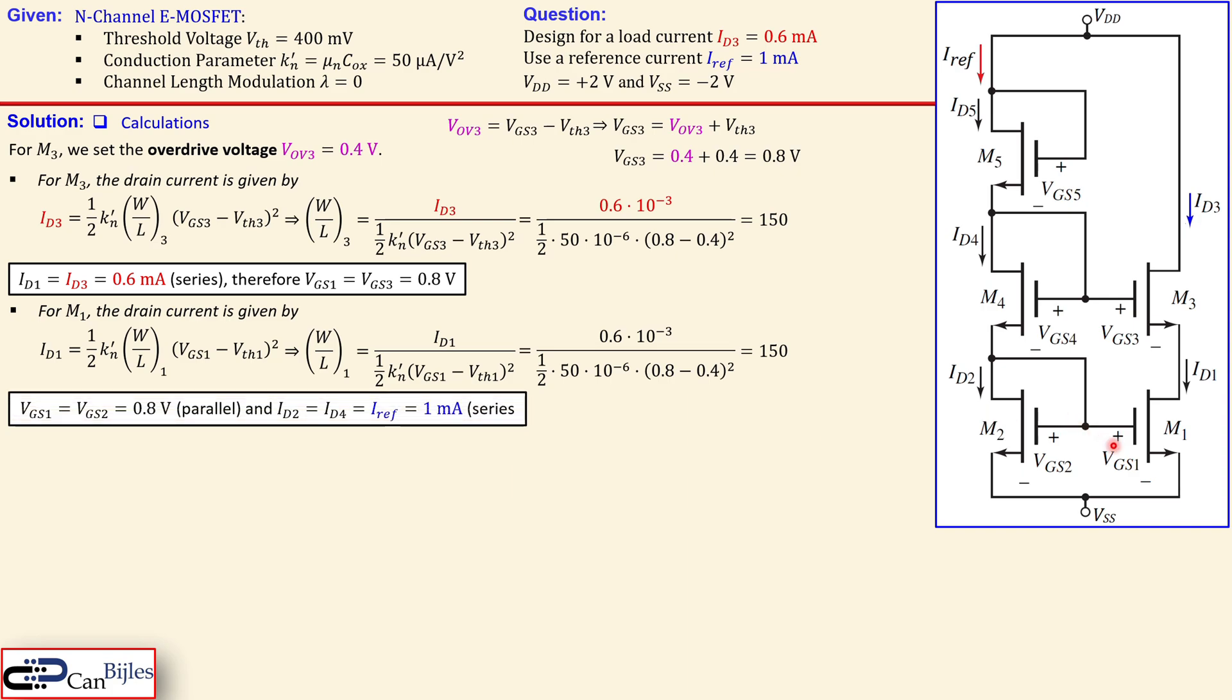Now VGS1 and VGS2 are in parallel. So VGS1 was 0.8 that means VGS2 is also 0.8 volts. And we also know that the ID2 is equal to ID3. Similar reasoning because there is no gate current. These are all zero. And this is also equal to IRF and also ID4.